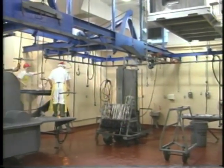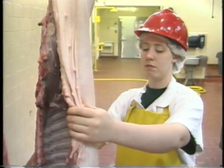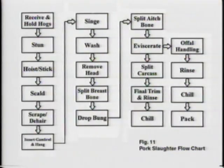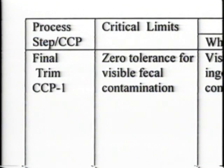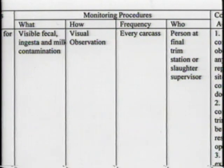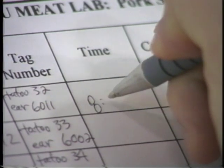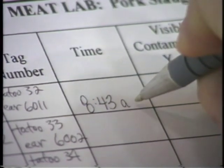Through hazard analysis, this very small establishment, the OSU Meat Lab, has identified the final trim step as a critical control point for a biological hazard in their pork slaughter HACCP plan. Their critical limit for this CCP, seen in the second column of Form B, Figure 12, is zero tolerance for fecal, ingesta, and milk contamination. Monitoring procedures for CCP-1 involve visually checking each carcass for fecal, ingesta, and milk contamination at the final trim step. As hogs are slaughtered, the date, time, lot number, and tag or tattoo number is entered into the monitoring log.